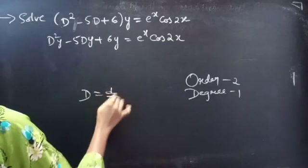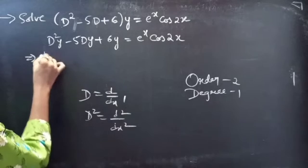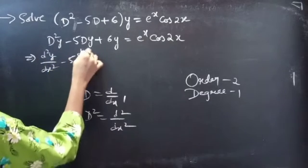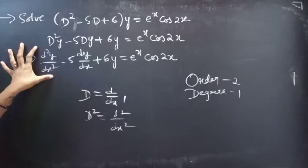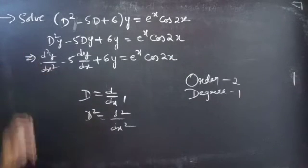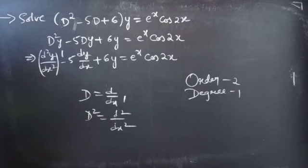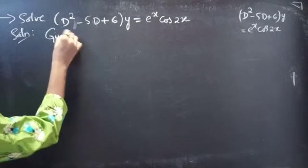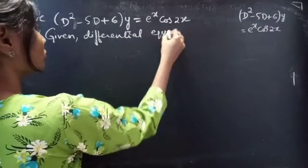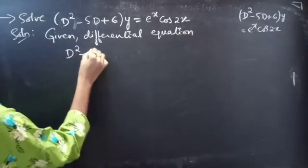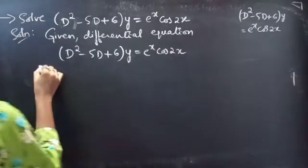We know that D is a differential operator. Then D² will be d²y/dx². We can write our equation as d²y/dx² - 5(dy/dx) + 6y = e^x cos2x. Here d²y/dx² is the highest derivative, so order is 2 and degree is 1. The given differential equation in operator form is (D² - 5D + 6)y = e^x cos2x.